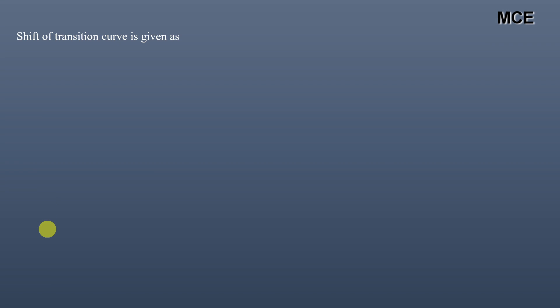The shift of the transition curve is given by S = L² / (24 × R). Using L = 49 m and R = 200 m: S = 49² / (24 × 200) = 0.5 meters. This is the shift of the transition curve.